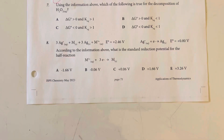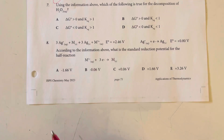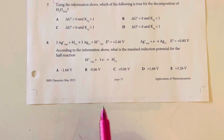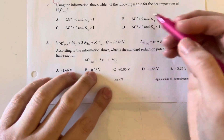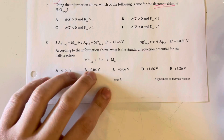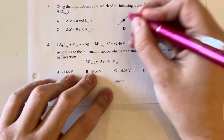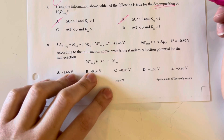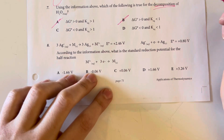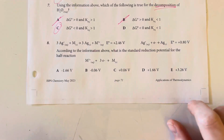Using the information above, which of the following is true for the decomposition of peroxide? The decomposition of peroxide is itself spontaneous — the previous reaction was the reverse, producing peroxide. For the decomposition, the reaction is spontaneous, so delta G will be negative and the equilibrium constant K will be greater than 1.